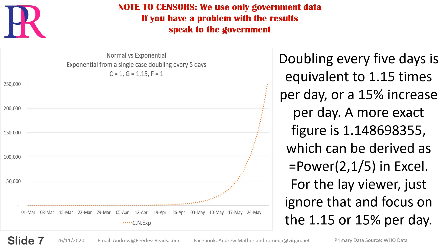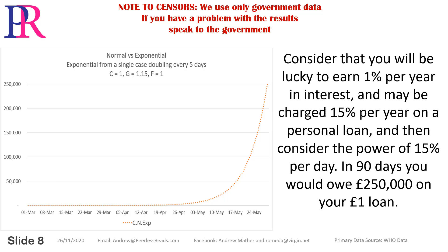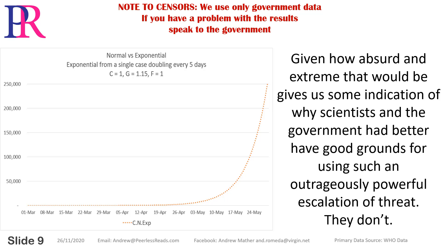A more exact figure is 1.148698355, which can be derived as equals power(2, 1/5) in Excel. For the lay viewer, just ignore that and focus on the 1.15, or 15% per day. Consider that you will be lucky to earn 1% per year in interest and maybe charge 15% per year on a personal loan, and then consider the power of 15% per day. In 90 days, you would owe £250,000 on your £1 loan. Given how absurd and extreme that would be, it gives us some indication of why scientists and the government had better have good grounds for using such an outrageously powerful escalation of threat.